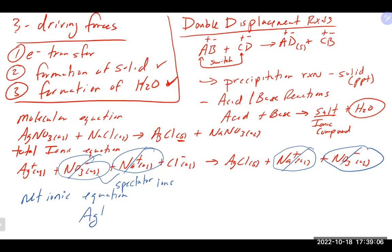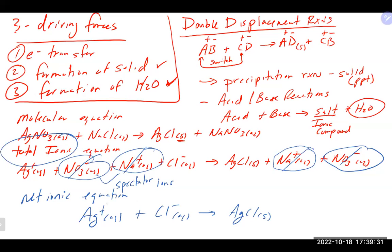The net ionic equation shows what is actually happening: the silver from silver nitrate finds the chloride from sodium chloride and makes a solid silver chloride. The net ionic equation tells us exactly what the main product is. In total ionic and net ionic equations, you must include the charges on all ions.